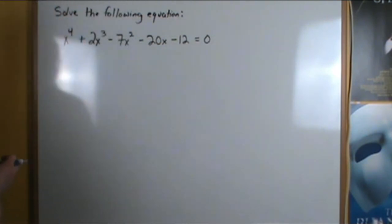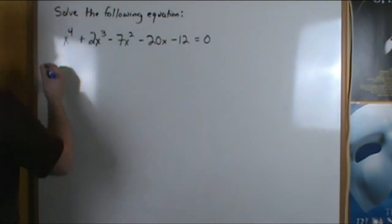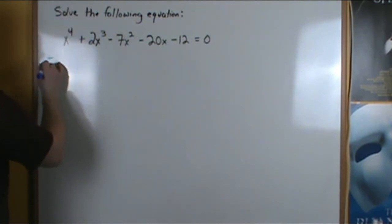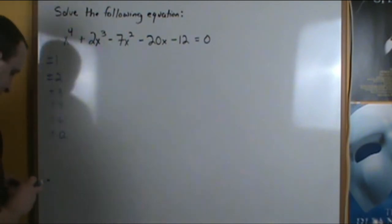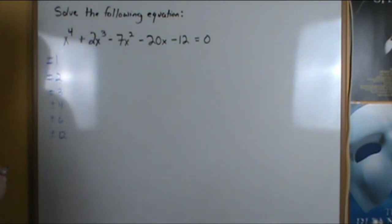So those possible factors are plus or minus 1, plus or minus 2, plus or minus 3, plus or minus 4, plus or minus 6, and plus or minus 12. Those are our only possible rational factors.